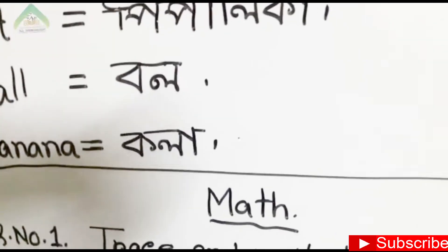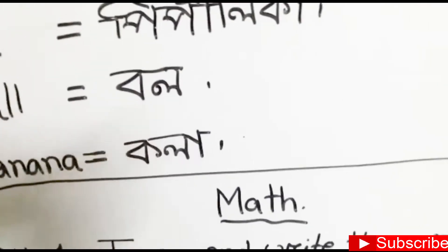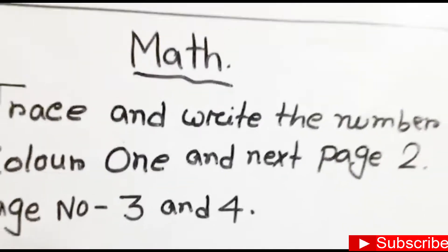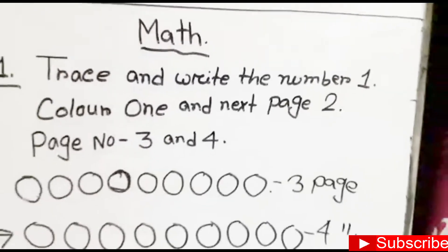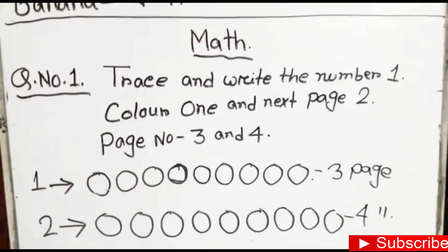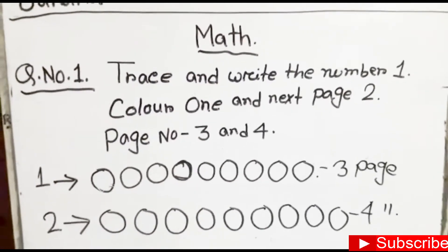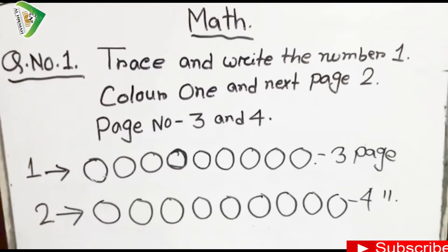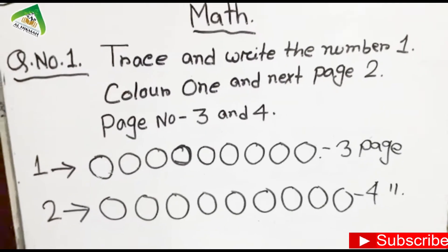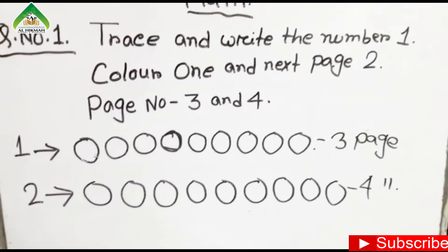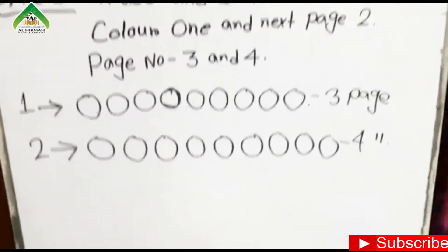Do this class. Write the number one, color one, and next page two. Take a color and cover number one. Next place two — take a color cover. Look, this is the book name — this is your book.